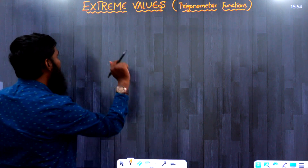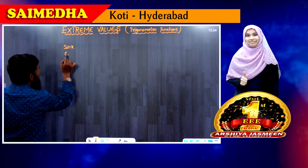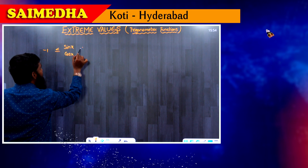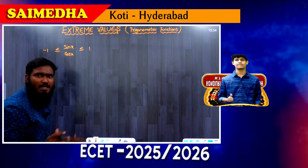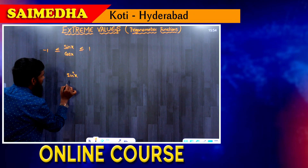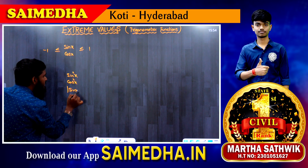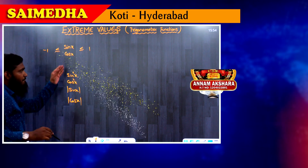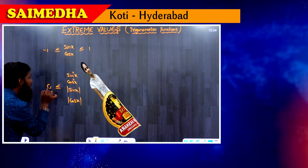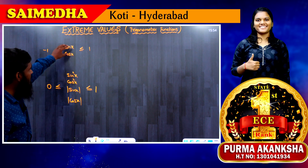Let us quickly revise the previous part. sin x and cos x have a minimum value of minus one and a maximum value of plus one. Similarly, sin²x, cos²x, |sin x|, and |cos x| have a minimum value of zero and a maximum value of one.